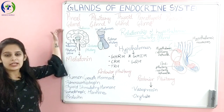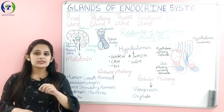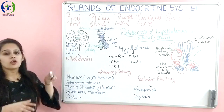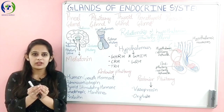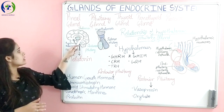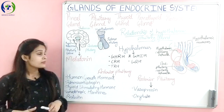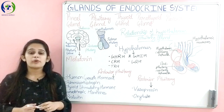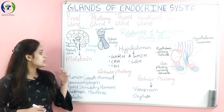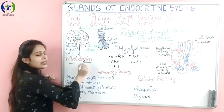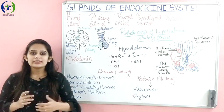Our first gland is the pineal gland. This pineal gland is a very small endocrine gland and it is somewhat pine-shaped, so it is called the pineal gland. It is situated between the two cerebral hemispheres, or you can say it is tucked in the groove where the two thalami join. This pineal gland is made up of pinealocyte cells. These pinealocyte cells synthesize the hormone called melatonin. Melatonin regulates our sleep cycle.